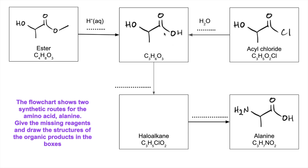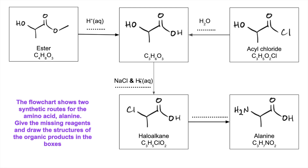For the final part of the route, we just need to look at what's changed between this hydroxycarboxylic acid and this amino acid. The carboxylic acid group hasn't changed — the change is here. The hydroxy group (the alcohol group) has ultimately become an amino group, but it's gone via a haloalkane — a chloroalkane, if we look at the molecular formula. So this molecule needs to be this. How do you bring about this change? You react it with a sodium halide and an aqueous acid — aqueous H⁺ ions, or aqueous sulfuric acid, and so on.